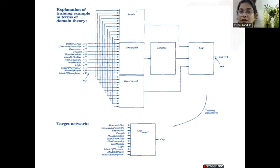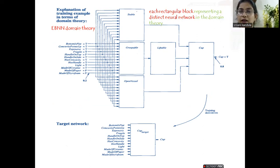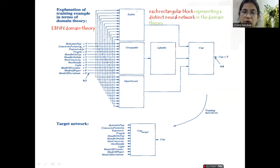Here you can see the example. In the upper part, this is a trained neural network derived from the domain theory. Each rectangular box represents a distinct neural network from the domain theory. We are taking the same domain theory used in the KBNN algorithm. The clauses considered are: bottom is flat, concavity points up, extensive drag and handle on top, handle on side, has concavity, has handle light, made of ceramic, made of paper, and made of Styrofoam.